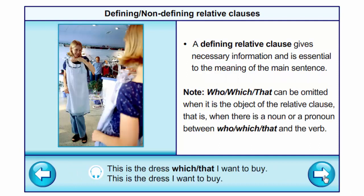Who, which, that can be omitted when it is the object of the relative clause — that is, when there is a noun or a pronoun between who, which, that and the verb.